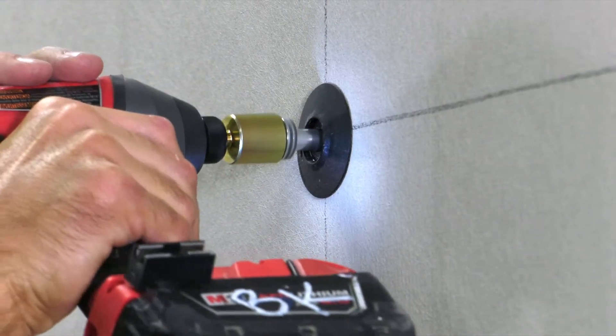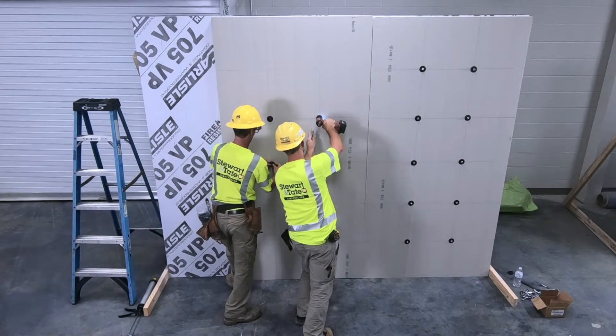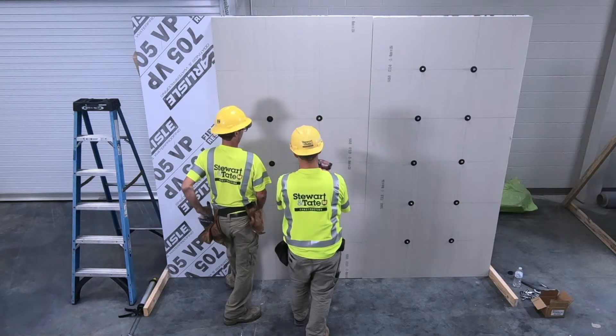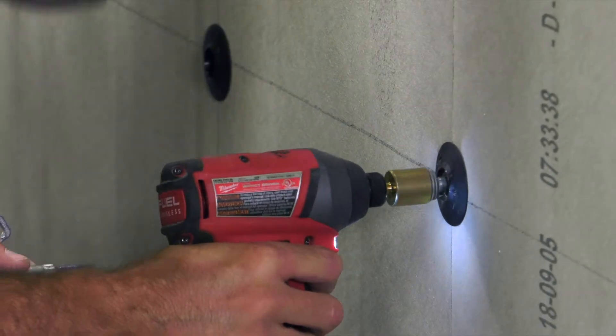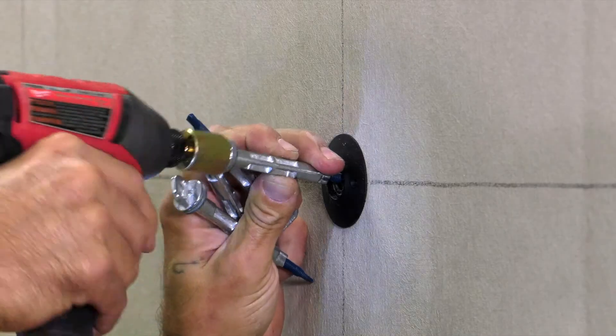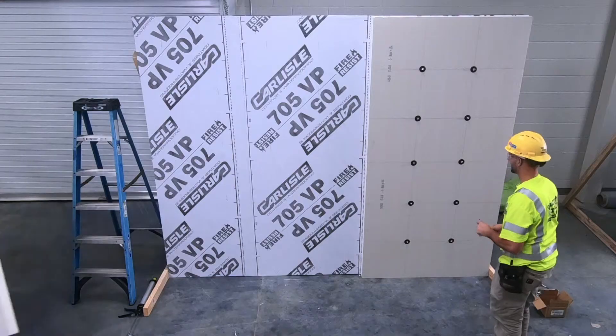They are then anchored with a drill screwing in the anchor. In this example, we used Hickman anchors, which are two-part anchors. Insert the screw into the anchor and use a special drill bit to drive the anchor through the polyiso, into the gypsum, and then into the stud. Do not over-torque.